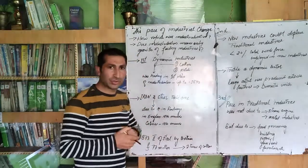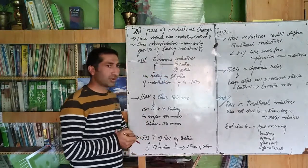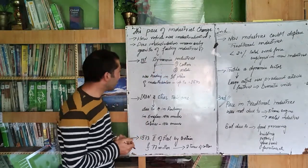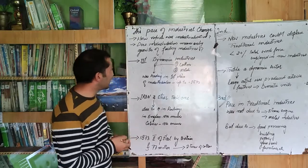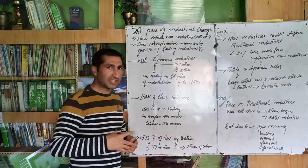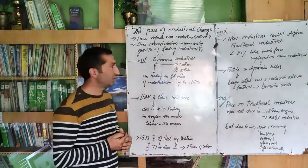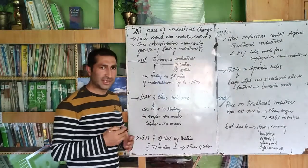So there were two dynamic industries. One is the cotton industry and one is the metal industry. Actually, cotton industry was the leading industry in the first phase of industrialization, up to 1840.